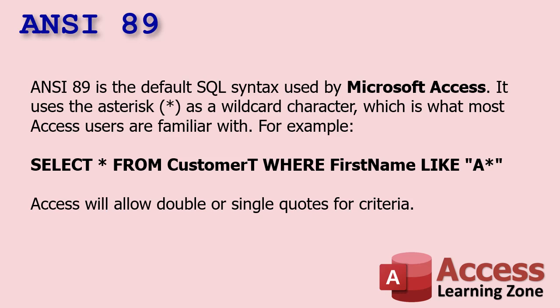There are two different syntaxes that Access can work with when it comes to SQL. There's ANSI 89 and ANSI 92. ANSI stands for the American National Standards Institute — one of those bodies that puts standards together, like those ISO dates. ANSI 89 is the one we know and love: it uses an asterisk for a wildcard character and a question mark for a single wildcard character. So SELECT * FROM CustomerT WHERE FirstName LIKE 'A*' — Access allows you to use double or single quotes.